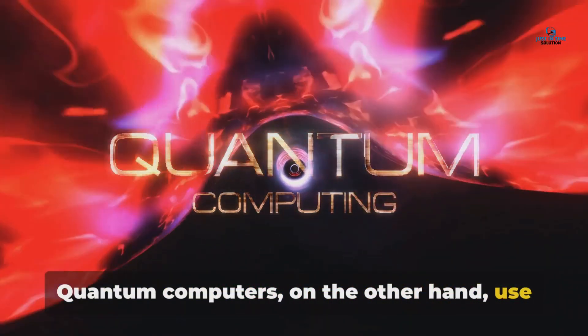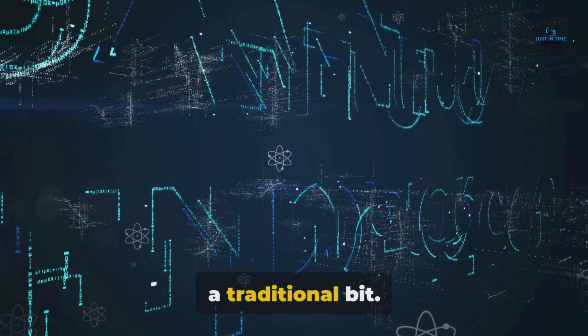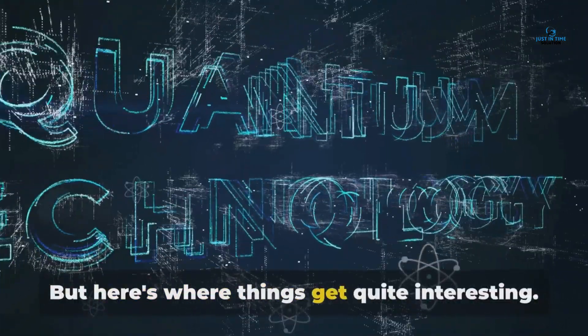Quantum computers, on the other hand, use something called qubits. A qubit can also be a zero or a one, like a traditional bit. But here's where things get quite interesting.